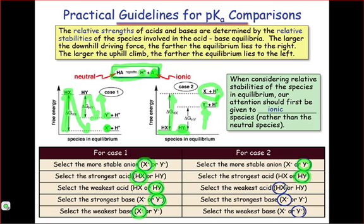Thus, the weakest acid would be Hx, and the strongest base would be X-, and this is because the downhill fall, the exothermic reaction from X- to Hx, is more favorable than the downhill reaction from Y- to Hy. As a result of that, X- is the strongest base, Y- the weakest base.